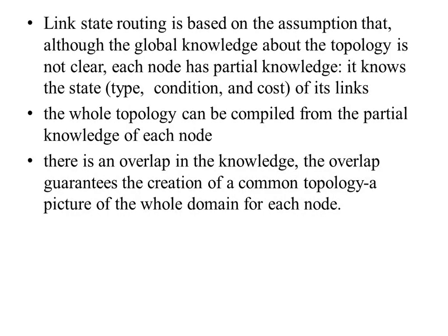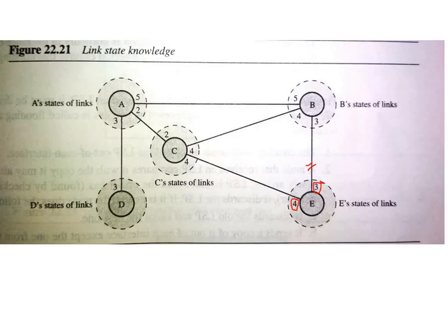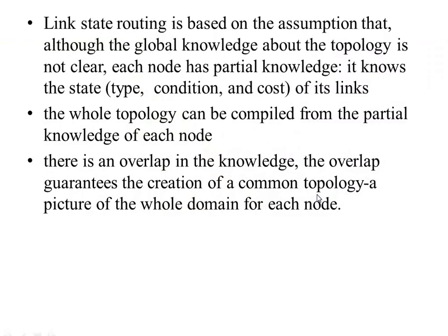Link state routing is based on the assumption of global knowledge sharing. Each node has partial knowledge — for A it's 5, 2, 3; for D it's only 3; for C it's 2, 4, 4; for B it's 5, 4, 3; and for E it's 4 and 3. You know the type, condition, and cost of the links. The whole topology is compiled from this partial knowledge, and the overlap guarantees the creation of a common topology picture giving each node the knowledge of the entire domain.